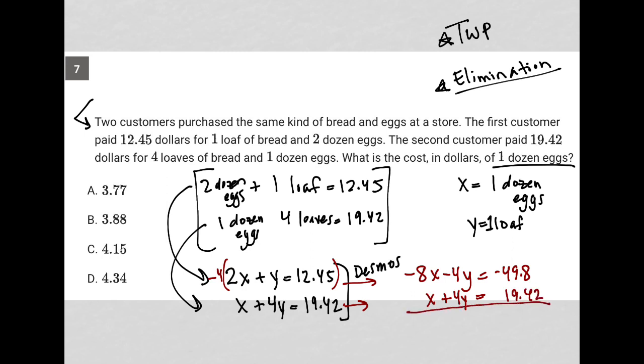And we can see why I decided to multiply by negative 4 is because now I can eliminate these 4s here. I can eliminate the Y values, basically. So now when I add these two equations together, I get negative 7X is equal to... Now let's go to my calculator again. Negative 49.8 plus 19.42 is equal to negative 30.38.